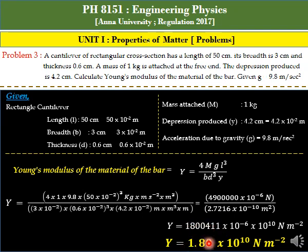1.80 times 10 to the power 10 newton meter to the power minus 2. This is the answer to the problem: calculate Young's modulus of the material of the bar. So the Young's modulus of the material of the bar is 1.80 times 10 to the power 10 newton meter to the power minus 2.